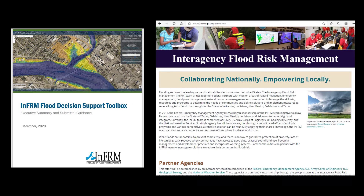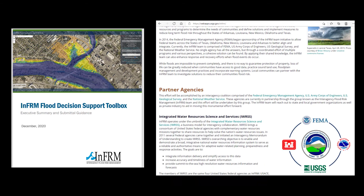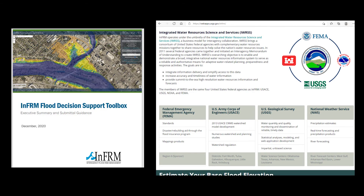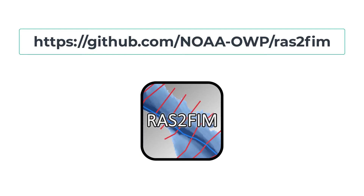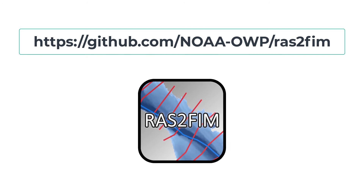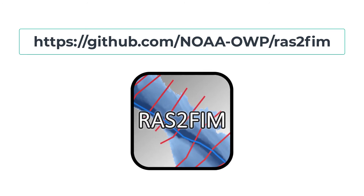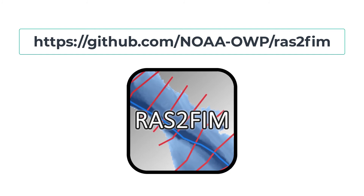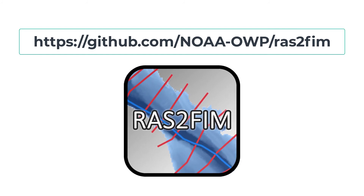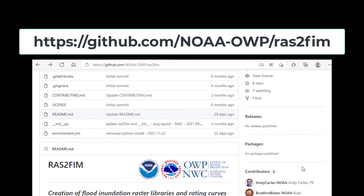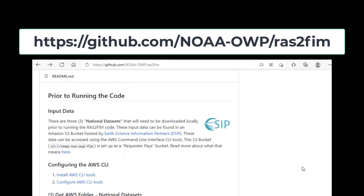Output data is created in compliance with the Interagency Flood Risk Management, INFORM, Flood Decision Support Toolbox Guidance. In summary, RAS2FIM is a group of free and open-source Python scripts that leverage existing 1D HEC-RAS models for the automated creation of flood inundation map libraries. When paired with the National Water Model's hydrology, they can be used as the backbone of a flood mapping web service. To get started using the scripts, visit the GitHub page.